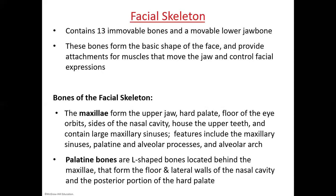You have two maxillae — maxillae with A-E is plural, maxilla with one A is singular. This is your upper jaw, also called your hard palate. If you put your tongue to the roof of your mouth just behind the teeth, that's the hard palate — that's your maxillae. If you carefully move your tongue backwards and it gets softer, you've reached the end of your maxillae and you're touching your soft palate, which isn't technically bone. The maxillae hold your upper teeth and have some sinuses as well.